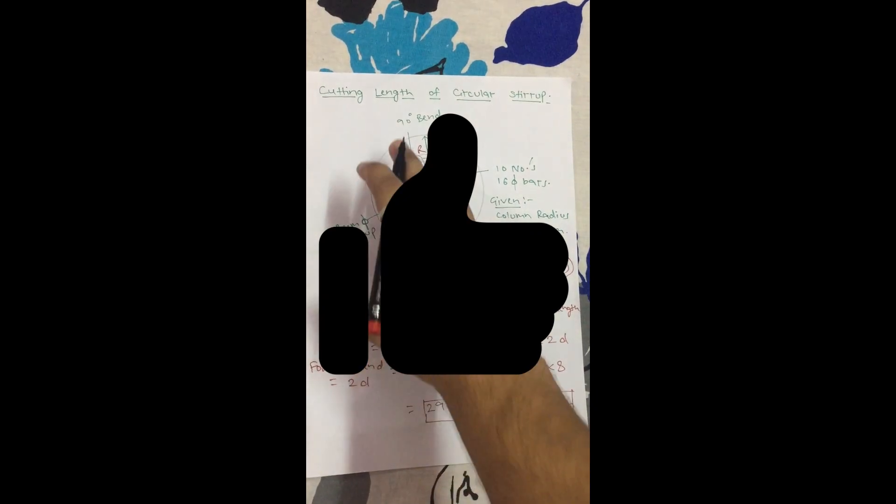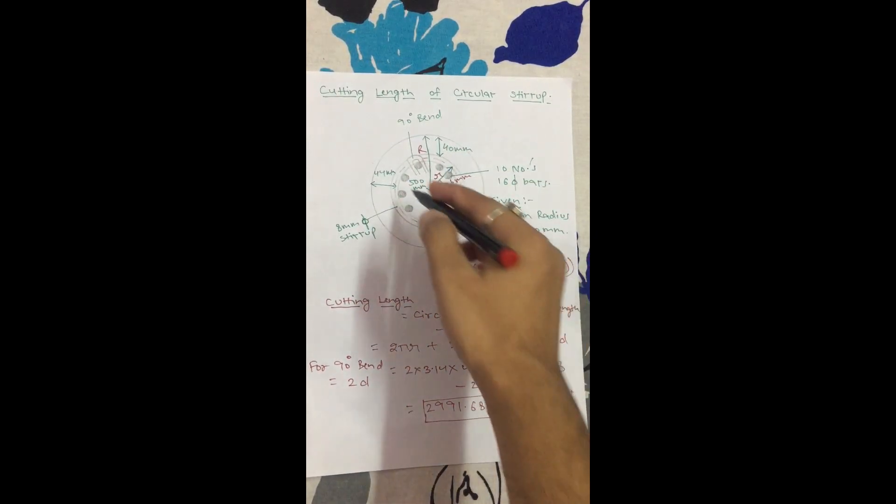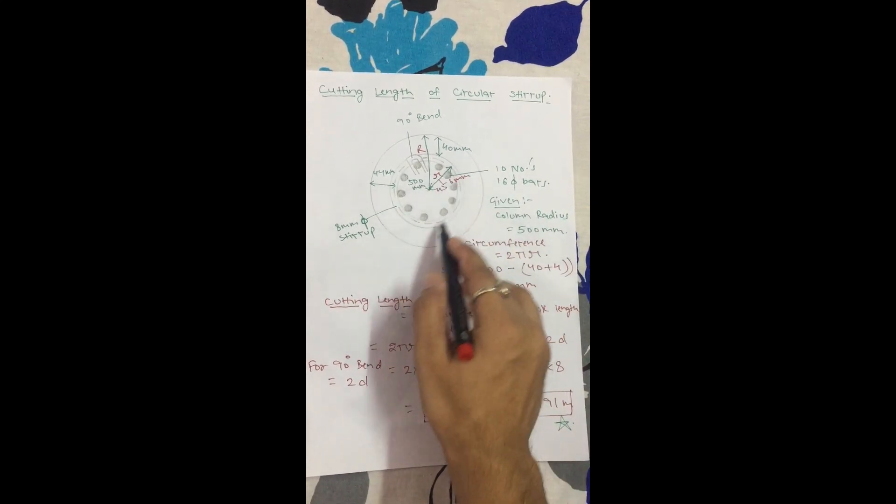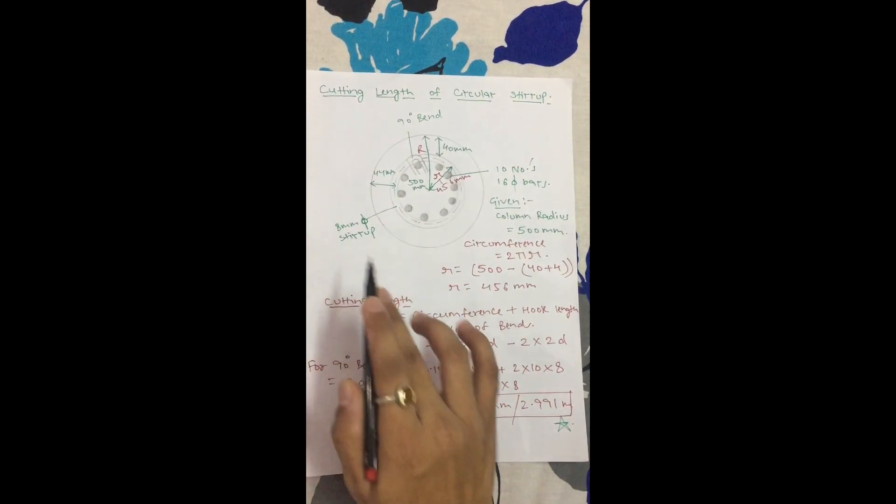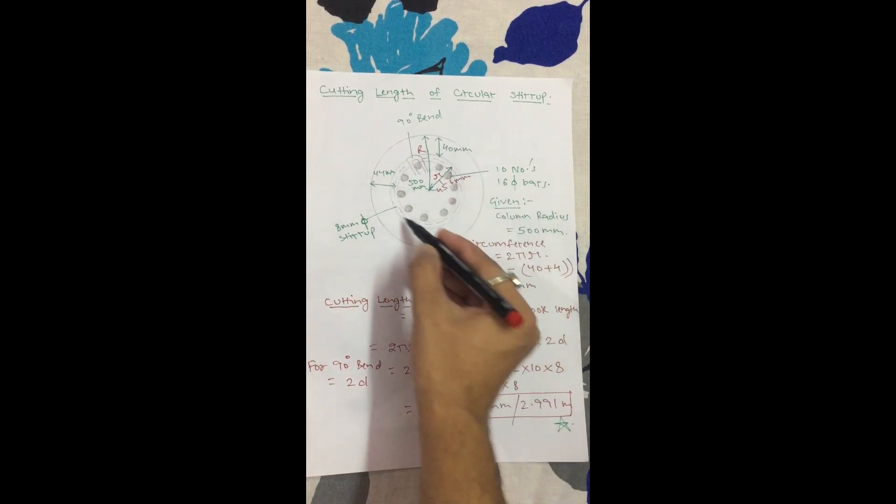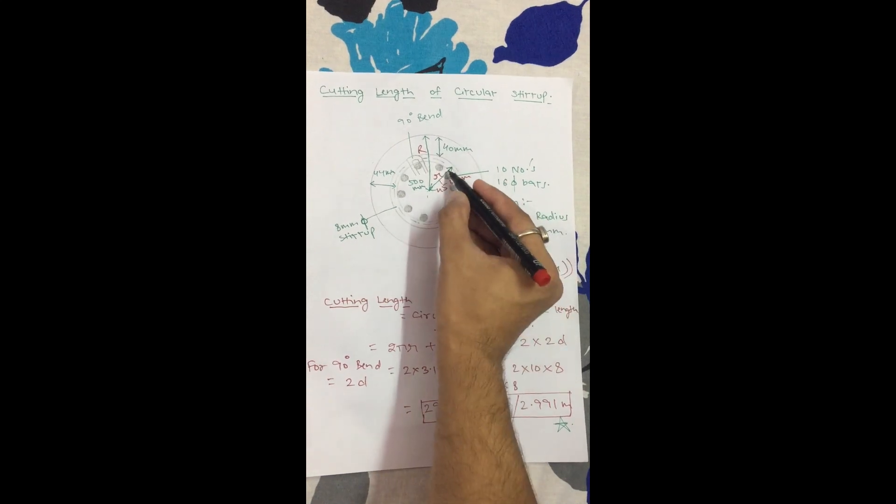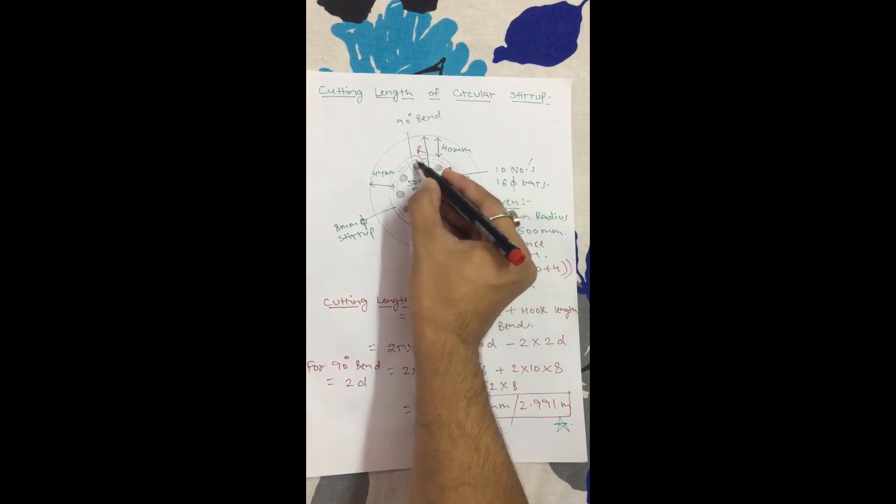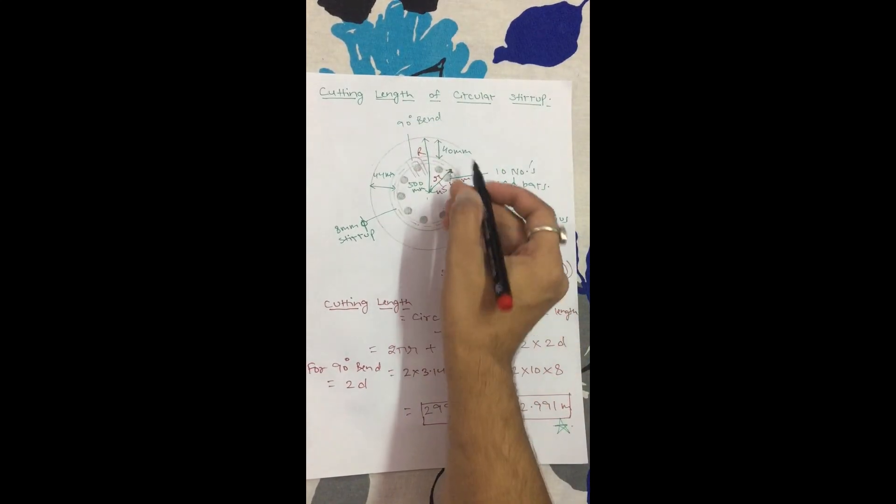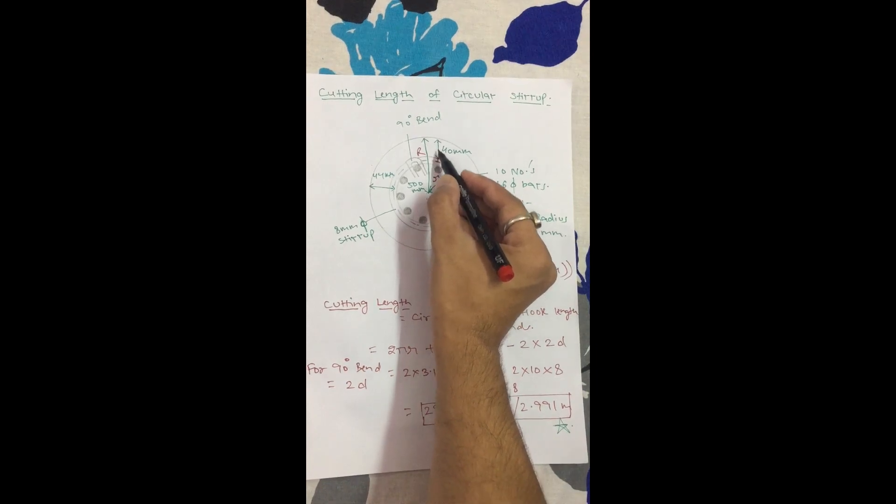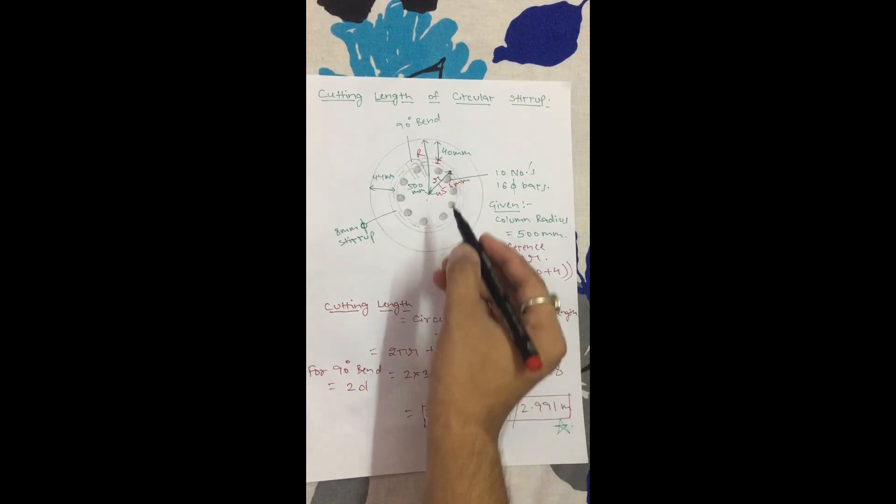Now let's find the cutting length of a circular stirrup. Suppose we have a column where the radius given is 500mm. We have main steel of 16mm and our stirrup is 8mm. So we need to calculate the cutting length here. The total radius is 500, we know that the cover is 40mm, and we need to take out the center-to-center radius to find the circumference.